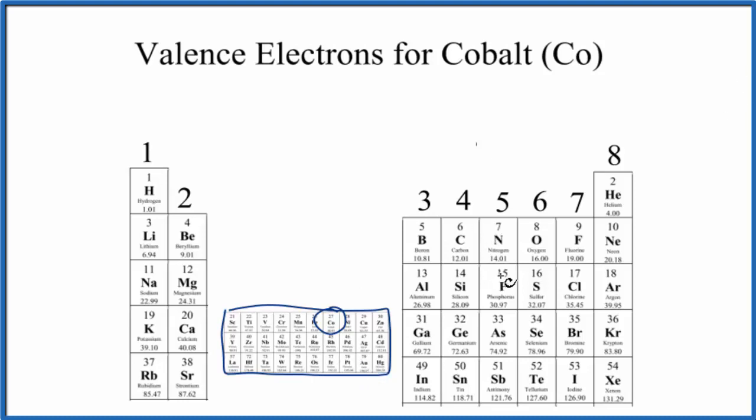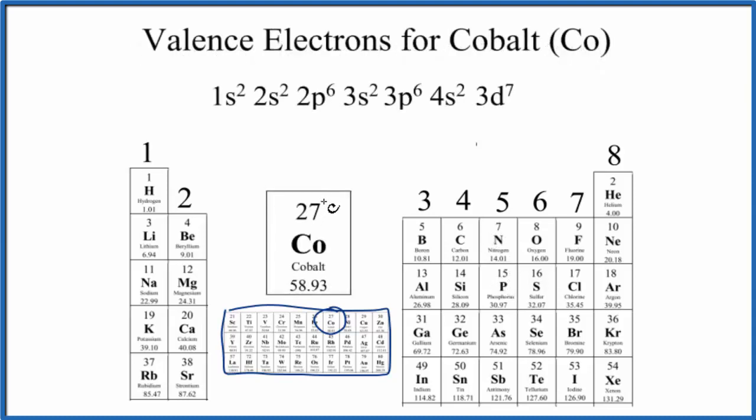So let's look at the electron configuration for cobalt to help us figure this out. Cobalt has 27 protons, that's its atomic number. Since this is neutral, same number of electrons. We spread these 27 electrons out here in our electron configuration.